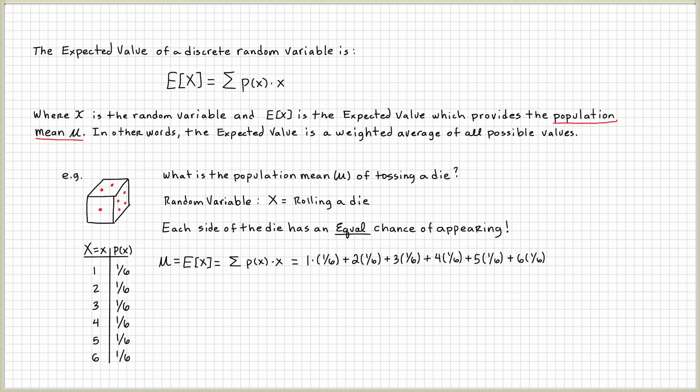So next thing I want to do is multiply: 1 times 1 over 6 gives you 1 over 6, 2 times 1 over 6 is 2 over 6, 3 times 1 over 6 is 3 over 6, and so forth. And then what do you do? You just add the tops and keep the bottom. And in this case, we get 21 over 6, which is 3.5.